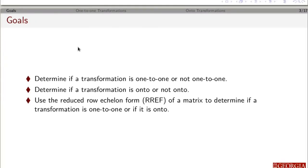By the end of this you should be able to take a transformation and determine whether it's one-to-one or not one-to-one. You should also be able to determine whether it's onto or not onto, and you should be able to use the matrix associated with a linear transformation, put it in reduced row echelon form, and then interpret what the meaning is in terms of onto versus one-to-one.